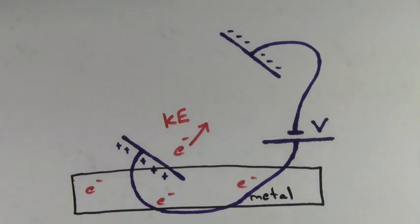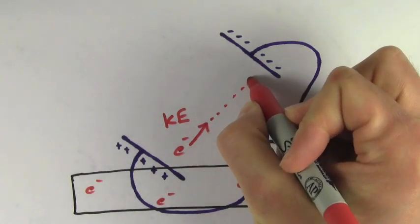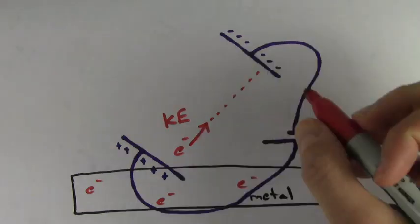The electron has kinetic energy, but as it approaches the negative plate, it slows down because it's repelled by the negatives. If you make the voltage of the battery big enough, the electron will actually stop and turn around before it hits the plate.